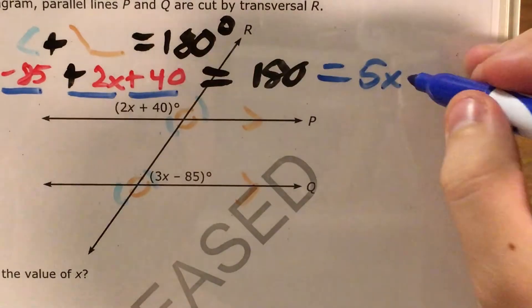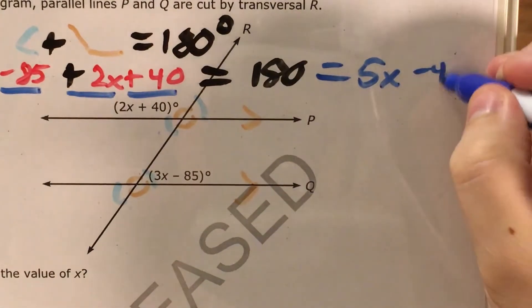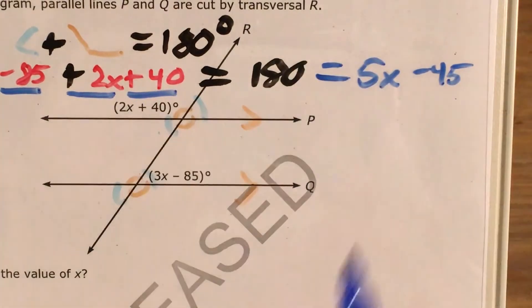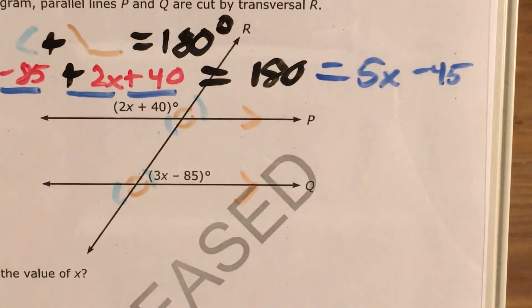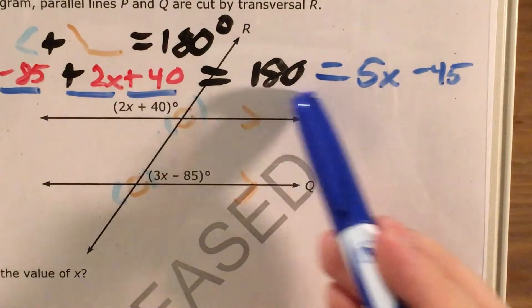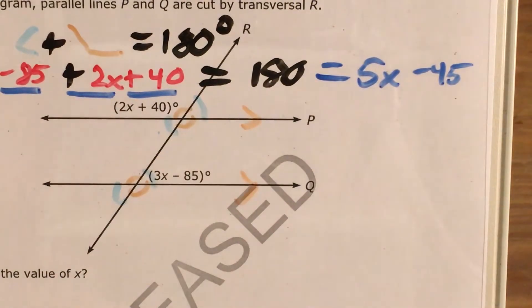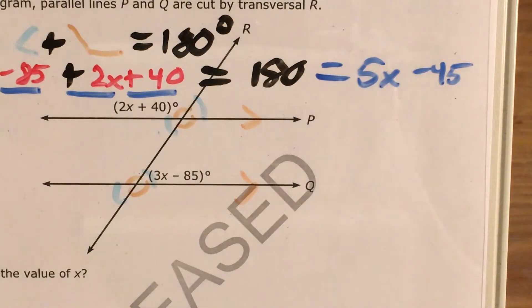So I know that 5 times some number minus 45 equals 180. At this point, everything here is just another two-step equation that I can use the same tricks to solve as I've always done.